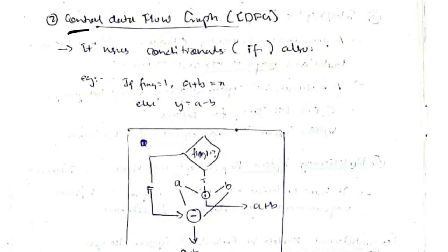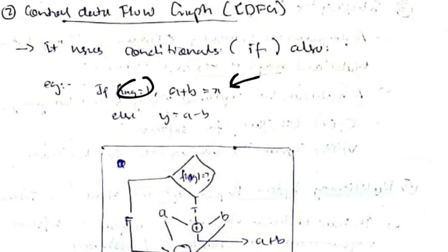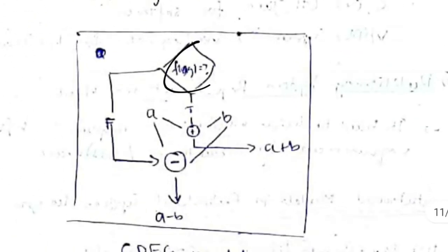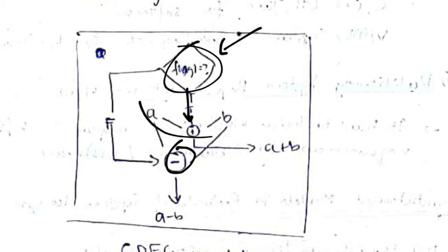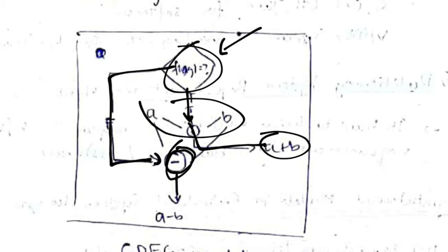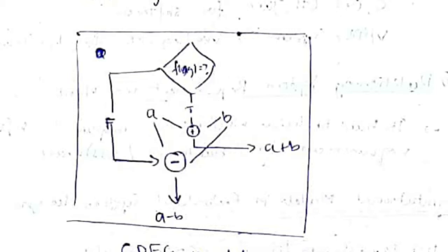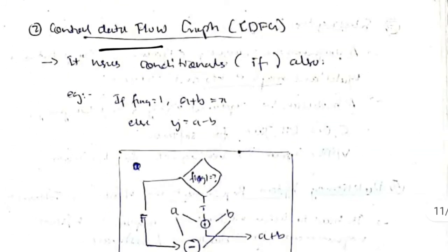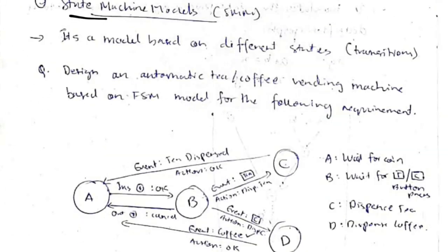The second is the control data flow graph (CDFG) model — same as DFG but with conditional (if-else) logic added. For example, if a flag is one, perform a+b; else perform a-b. The conditional branches the flow: if flag is true, take the a+b path; if false, take the a-b path.